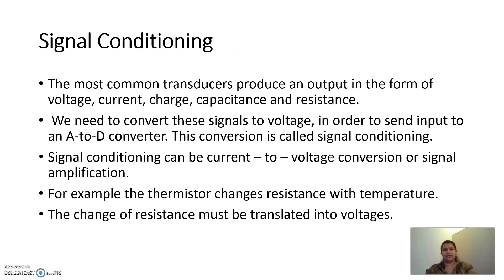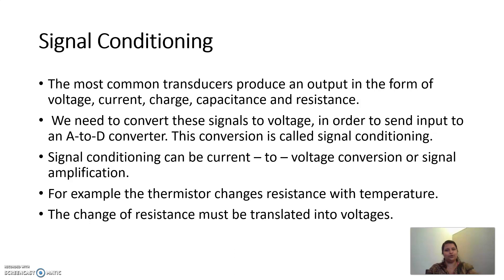Next, signal conditioning. The most common transducers produce output in the form of current, voltage, charge, capacitance, resistance, etc. We need to convert these signals into voltage in order to send input to an analog-to-digital converter, and this conversion is called signal conditioning.